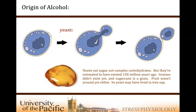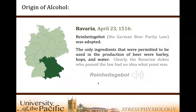The estimates — I wasn't around 150 million years ago — but with compelling scientific evidence, about 150 million years ago or so, since sugarcane is a grass and grasses weren't around then, the foundation of yeast was probably tree sap. Now, reinheitsgebot...